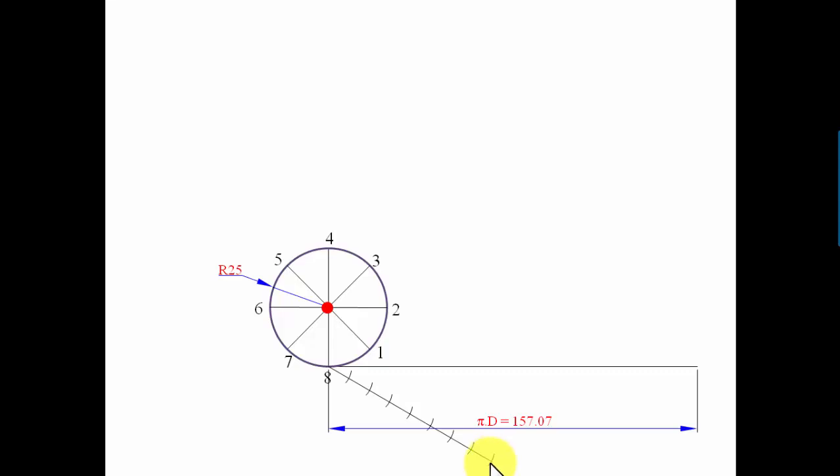Now join this point with the end of this line. Keep the mini drafter along this line, tighten the screw, move to the seventh point and draw a line, move to the sixth point and draw a line, keep doing so until all points have been exhausted. You can name each point: this is one, this is two, three, and so on.